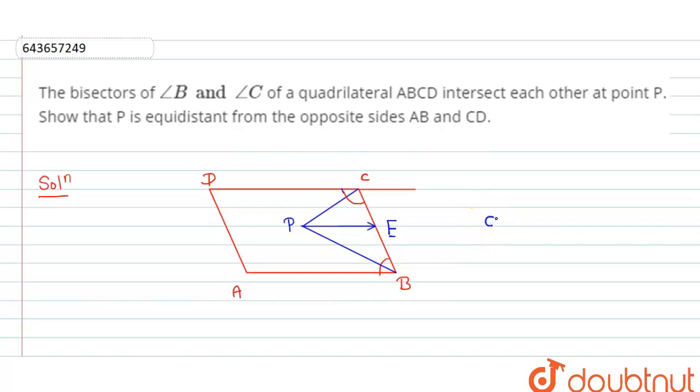By using the property of angle bisector, we can say the length of CE should be equivalent to the length of BE.